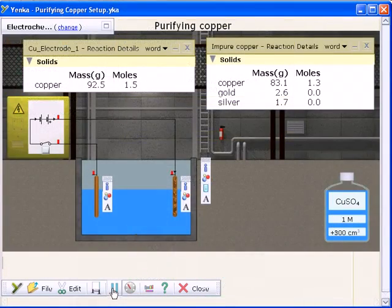There's a range of ready-made models on the Yanke website which you can use and modify. For example, see how copper is purified using electrochemistry.